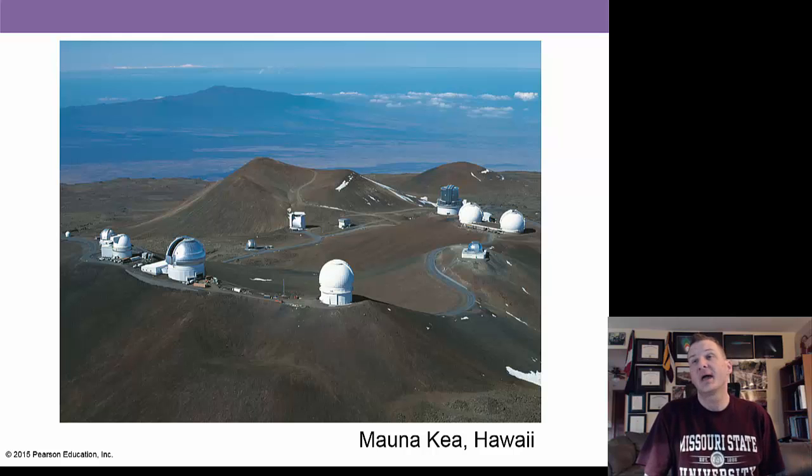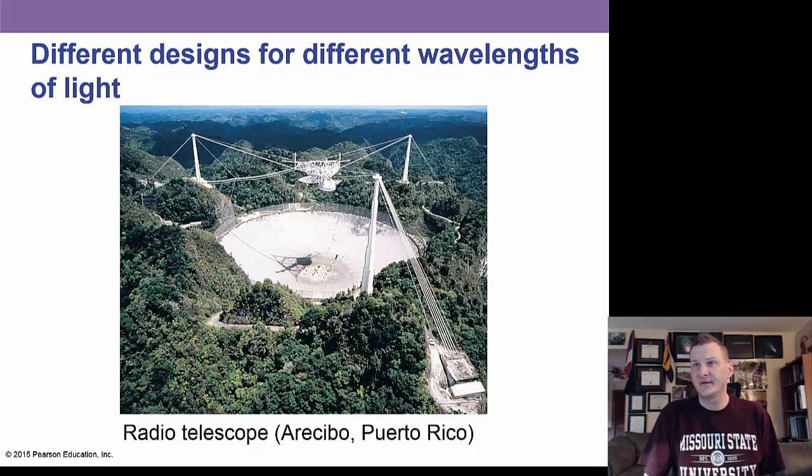Here's Mauna Kea in Hawaii, a very large observatory, about 16,000 feet up. But we can have different kind of telescopes. Here is the Arecibo Radio Telescope in Puerto Rico, and it is the largest radio telescope in the world, built into a valley here. And they've been using this to look, to listen for signs of intellectual intelligence from space, and also looking at comets and asteroids.